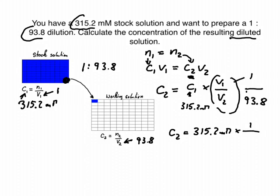And that has no dimension. And if we put that into a calculator, we get 3.4 millimolar. Quick reality check: our working solution, the diluted solution, has a much lower concentration than our stock solution.